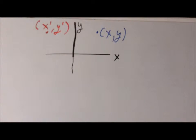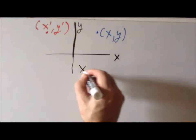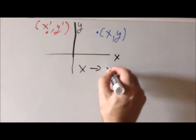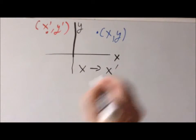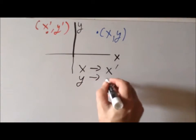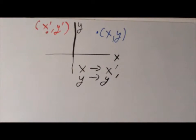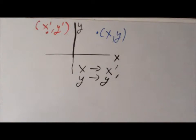Essentially what we're thinking about is that x, the x coordinate, is going to go to a new coordinate x prime. And y is going to go to a new coordinate y prime. For the time being, we're looking at this in two dimensions, so-called R-two space. But soon enough, we'll be able to extend it into three dimensions.